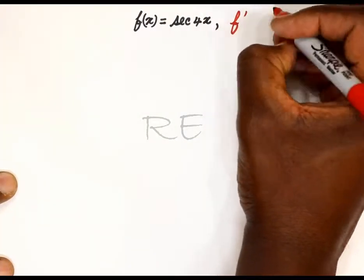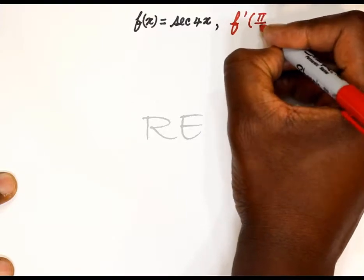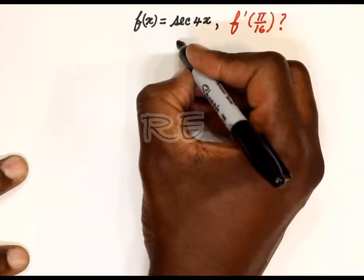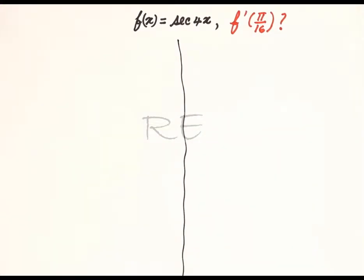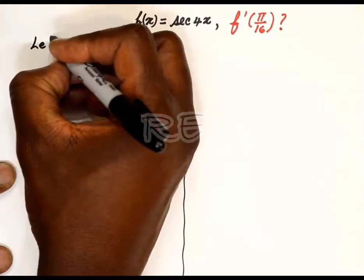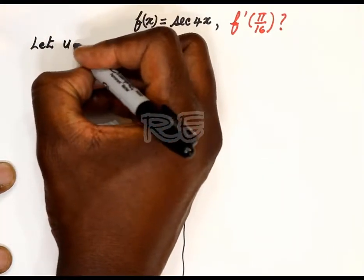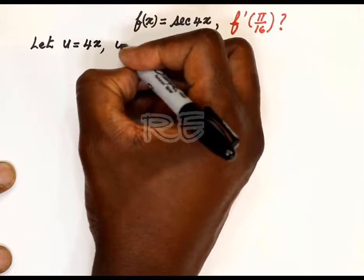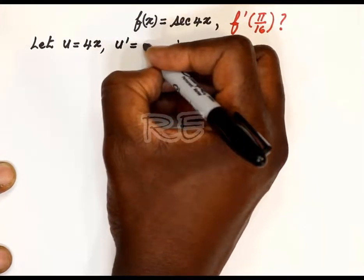Question 17: we are looking for f prime of pi over 16 when the function is f of x equal to secant 4x. Secant 4x is a composite function, so we're going to let u equal to 4x.